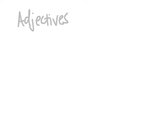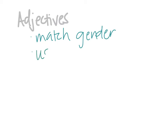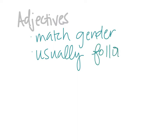Just like the articles, adjectives are going to match the gender of the nouns that they describe. So if the noun is a male noun, the adjective will be male. If the noun is a female noun, the adjective will be female. Also in Spanish, adjectives usually — not every time, but almost always — they will follow the noun, meaning they come after the noun.